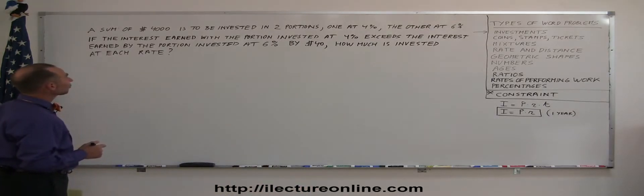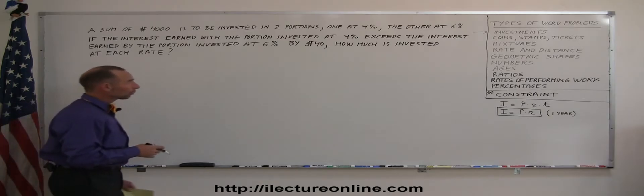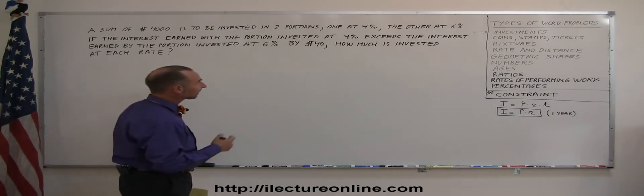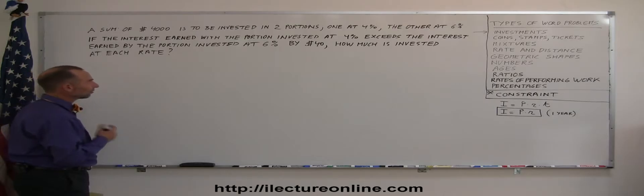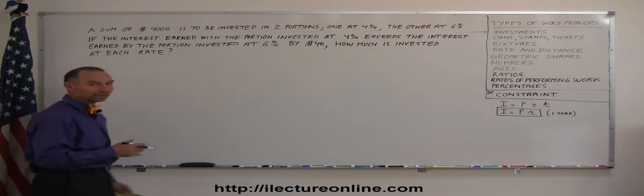A sum of $4,000 is to be invested in two portions, one at 4%, the other at 6%. If the interest earned with the portion invested at 4% exceeds the interest earned by the portion invested at 6% by $40, how much is invested at each rate? Whoa, doesn't that give you a headache already before you even get started?